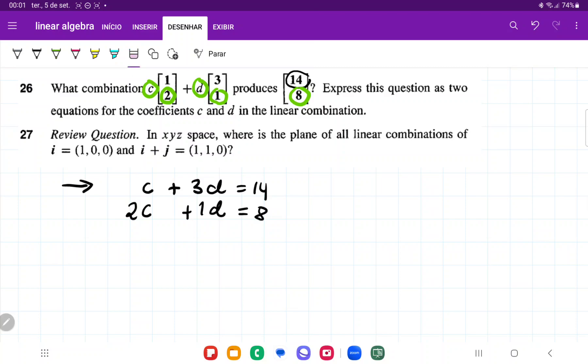So 1 times negative 2 becomes negative 2c, 3 times negative 2 becomes negative 6d, and 14 times negative 2 becomes negative 28.